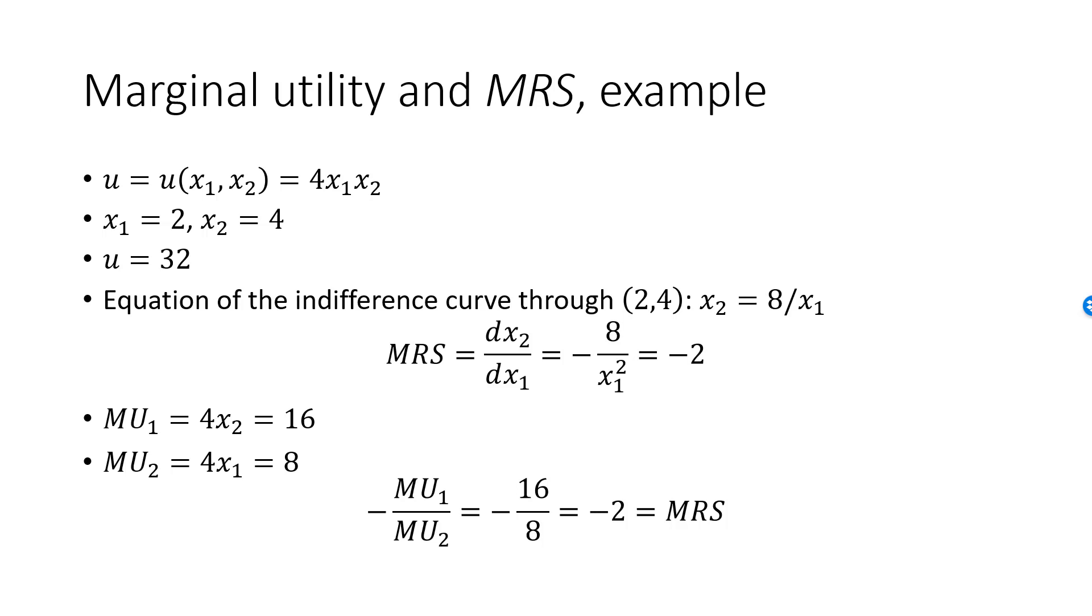So even though the value of MU1, 16, has no interpretation, the fact that it is twice as big as MU2 does mean something. At the bundle 2,4, the consumer values good one twice as much as good two at the margin. Therefore, she is willing to trade two units of good two for one unit of good one, which is why the absolute value of MRS is 2.